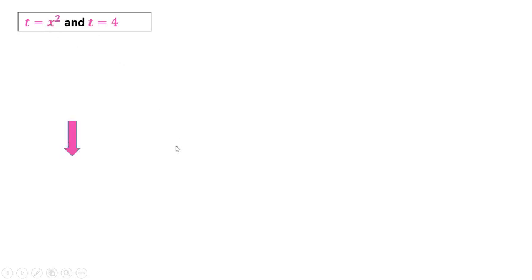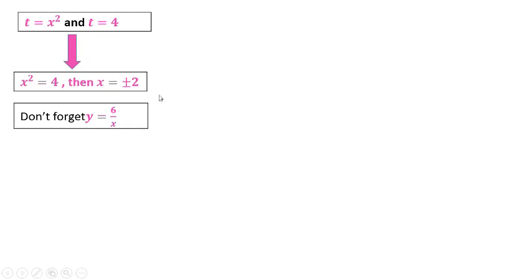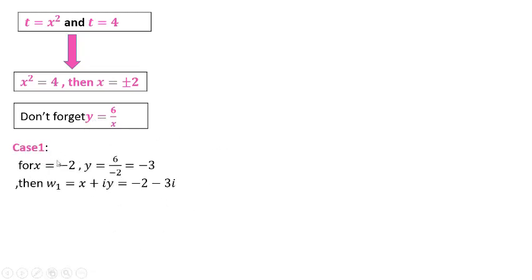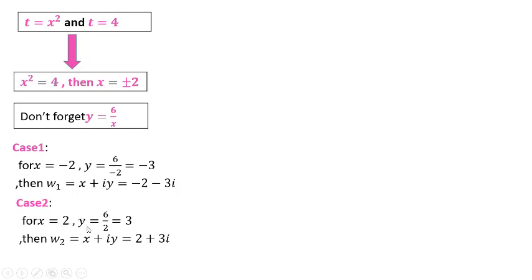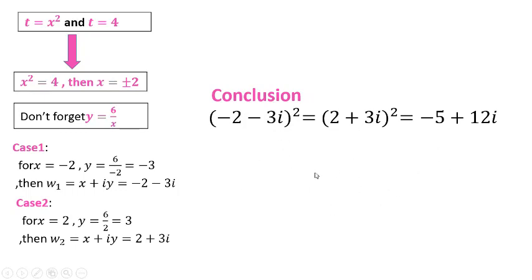Since t = x² and t = 4, we get x² = 4, so x = ±2. Using the condition y = 6/x, to each value of x there exists a unique value of y. Case 1: x = −2 gives y = −3, so w₁ = −2 − 3i. Case 2: substitute x = 2 to get y = 3, so w₂ = 2 + 3i. As you notice, these two square roots are opposite. Conclusion: the complex number −5 + 12i has two square roots: 2 + 3i and −2 − 3i.